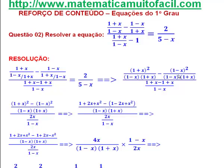Já tenho o mesmo denominador, então eu posso adicionar essas frações. Vou adicionar: 1 mais x ao quadrado, menos 1 menos x ao quadrado, sobre o denominador comum 1 menos x vezes 1 mais x. Tudo isso sobre 2x sobre 1 menos x.